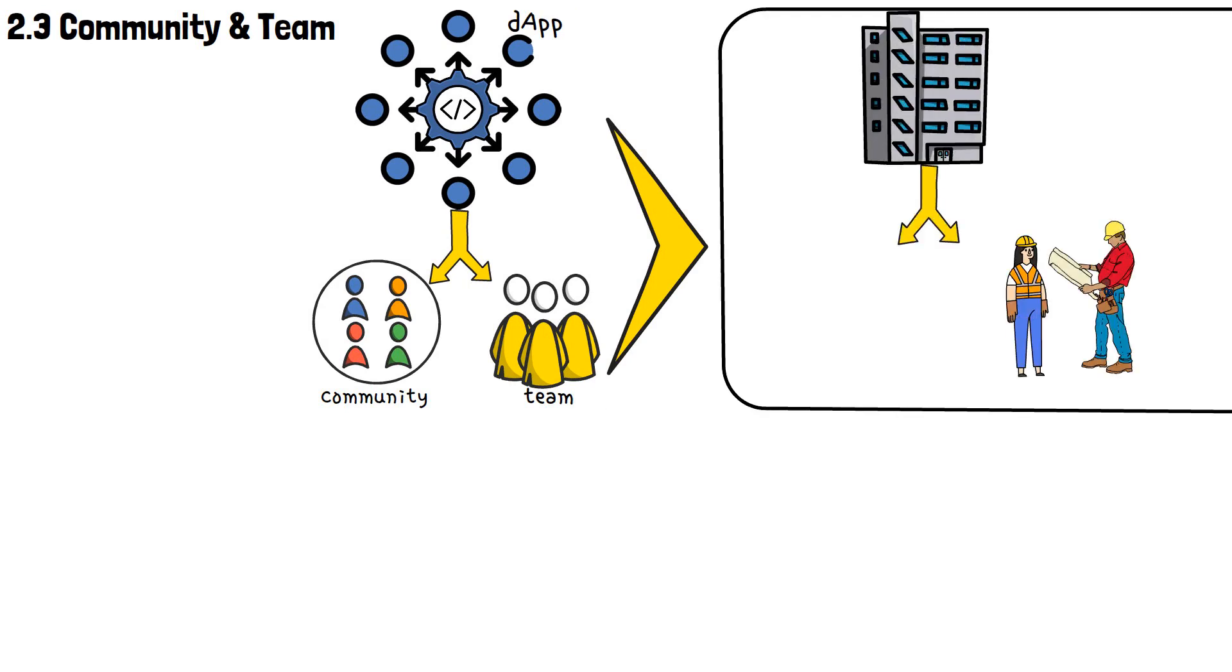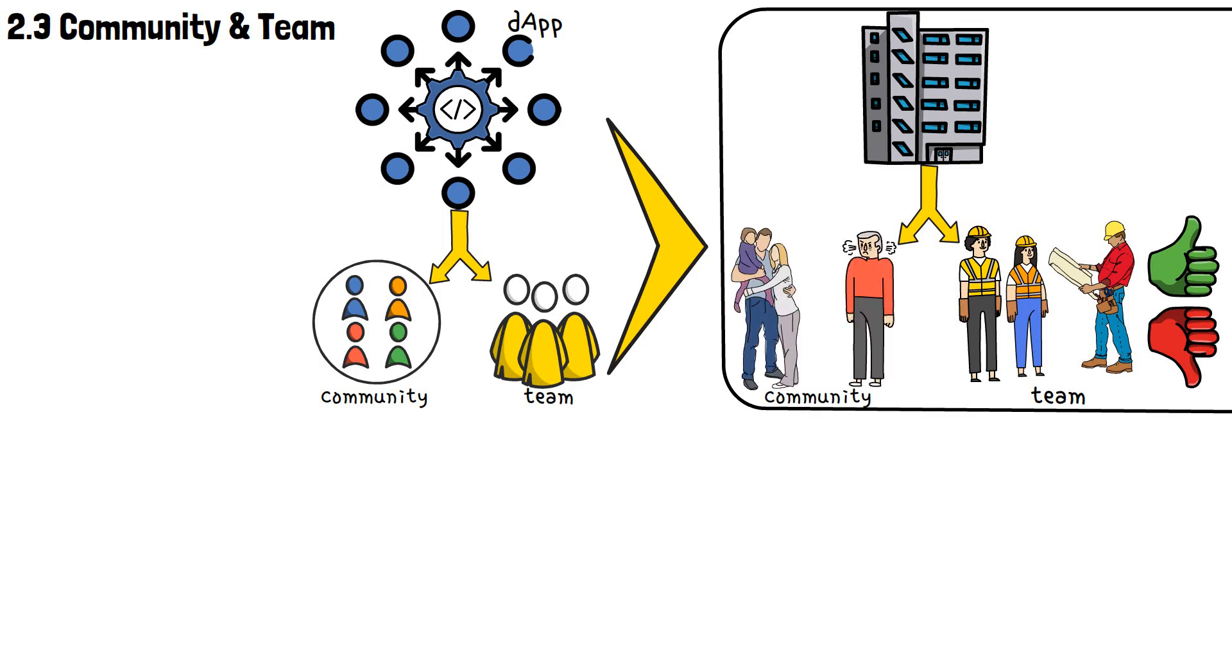In this case, the architects and the construction team represent the team behind a particular dApp. They're either reliable or not. The community is the neighborhood in which this apartment is being built, it's either pleasant to be in or not. When studying dApp examples to select the best dApp, the importance of a strong community and an open, transparent team behind it are significant,